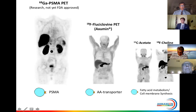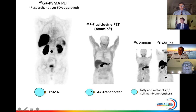You get the molecular information — some of it is what we call physiologic uptake, such as in the liver and kidneys, and then you have abnormal uptake in the bone. Currently, there is an approved tracer called Axumin (18F-fluciclovine), which targets amino acid transporters expressed on prostate cancer cells. Older tracers such as C-11 acetate or 18F-choline target fatty acid metabolism and cell membrane synthesis, which is upregulated in prostate cancer cells.